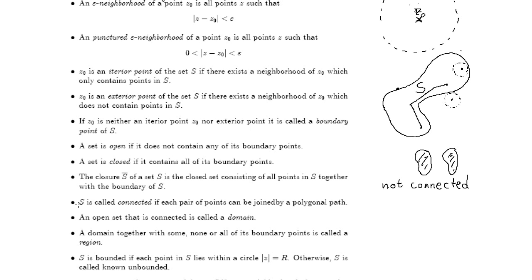S is called connected. Here you see a connected set. If every pair of points in this set can be joined by a polygonal path, and this polygonal path should be contained in S.